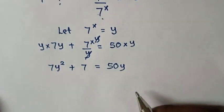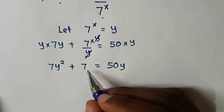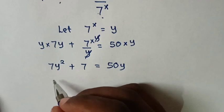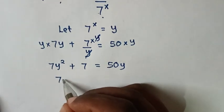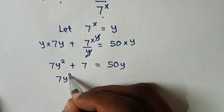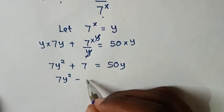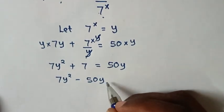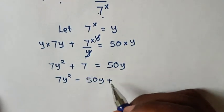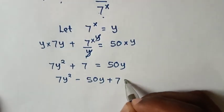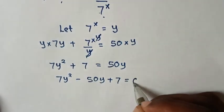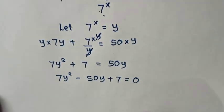We take 50y to the left side, so the equation becomes 7y² - 50y + 7 = 0.